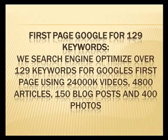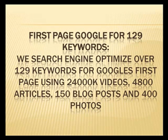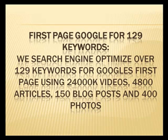We also include the first page of Google for 129 keywords. We search engine optimize over 129 keywords for Google's first page using 24,000 videos, 4,800 articles, 150 blog posts, and 400 photos.